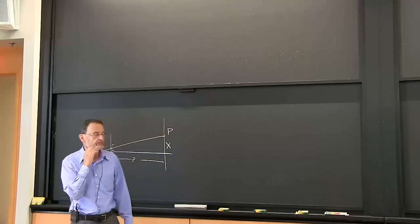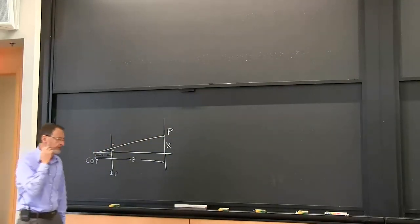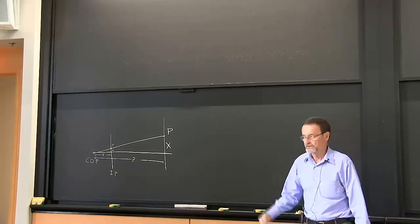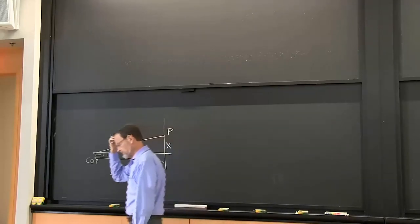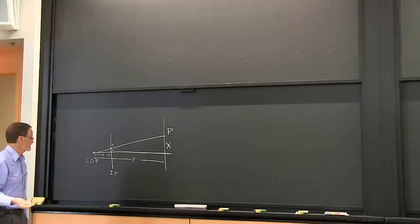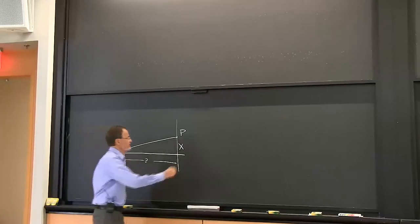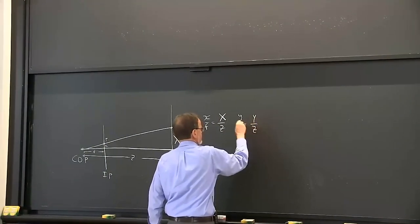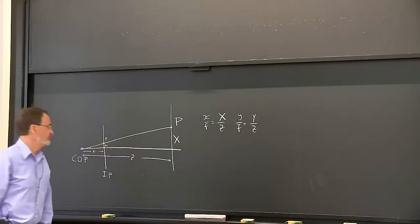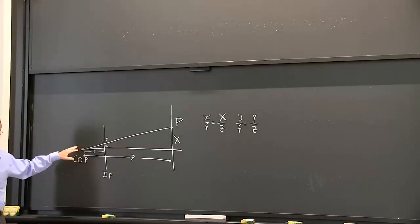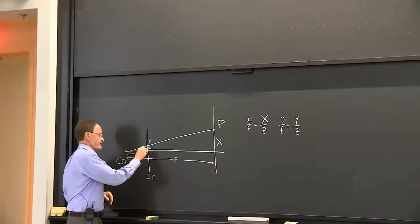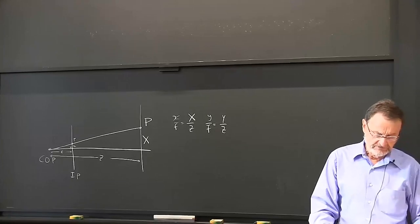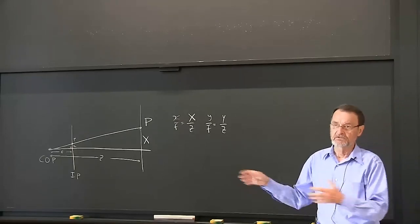We'll start off with a review of perspective projection and things relevant to the homework problem, particularly the last two questions. We'll go from perspective projection to motion. In perspective projection, we have a relationship between points in the environment and points in the image — a simple relationship between the 3D world and the 2D world — and we'll go from that to motion by differentiating that equation, then talk about motion of brightness patterns in the image itself.